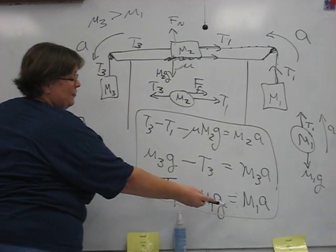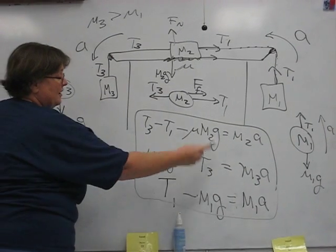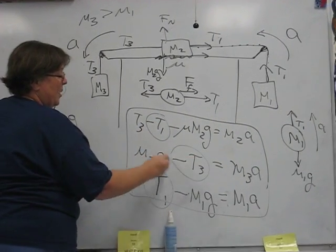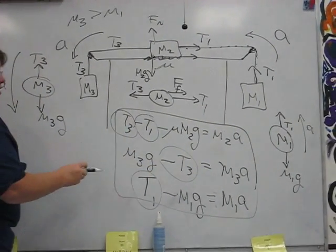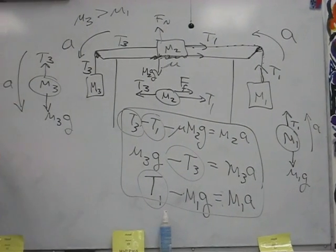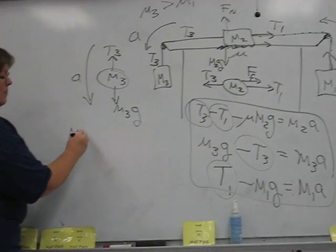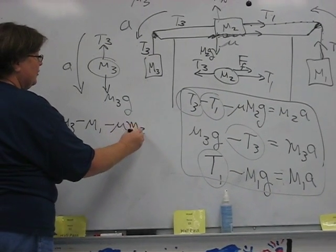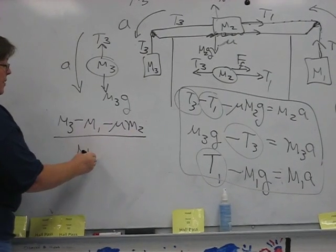So again, though, how convenient if you simply add up all the left-hand sides, the T1's will cancel one another and likewise the T3's. So you'll really just be left with M3 minus M1 minus mu M2 all over the sum of the masses.